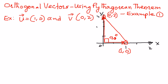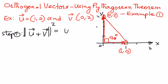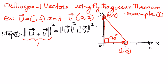So according to the Pythagorean theorem, if we can represent this as follows — this is step number 1. According to the Pythagorean theorem, the magnitude of vector u plus vector v, raised to the power of 2, is going to be equal to the magnitude of vector u raised to the power of 2, plus the magnitude of vector v raised to the power of 2. If we call this the left-hand side and this the right-hand side, we will take the left-hand side and show that the value obtained there is equal to the value obtained on the right-hand side.